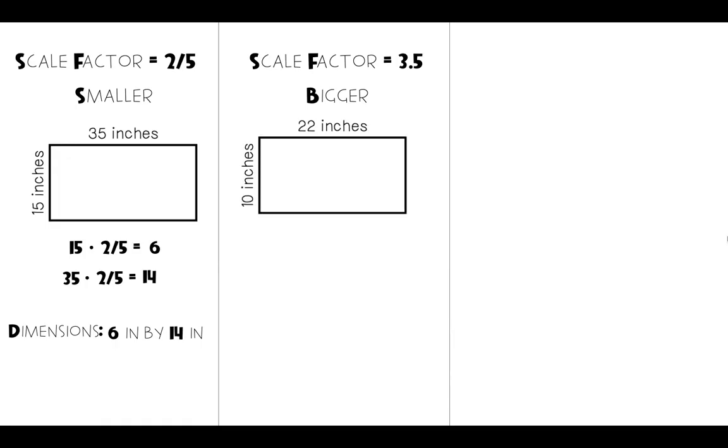So looking at our rectangle, it is 10 inches by 22 inches. We have to multiply each of those sides by 3.5. So we're going to do 10 times 3.5, and that's going to give us 35. We're then going to do 22 times 3.5. And that's going to give us 77. So the dimensions of our new bigger rectangle are going to be 35 inches by 77 inches.